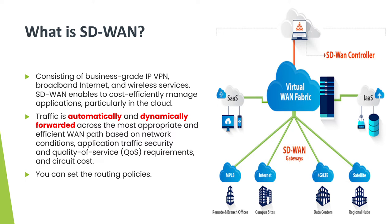If there is congestion in any certain network route, then automatically the traffic will be switched to another path which is more suitable. Everything can be done using routing policies, and the routing policies can be set up by an administrator. Whenever we set up SD-WAN, we can set routing policies which can take care of such scenarios.